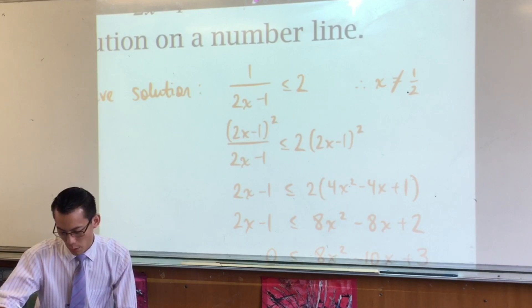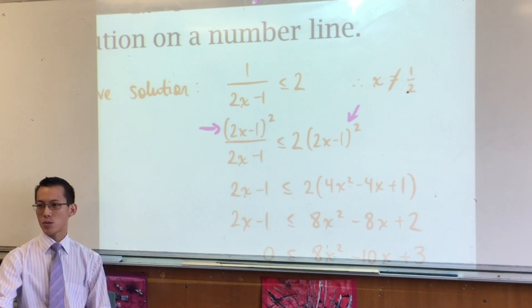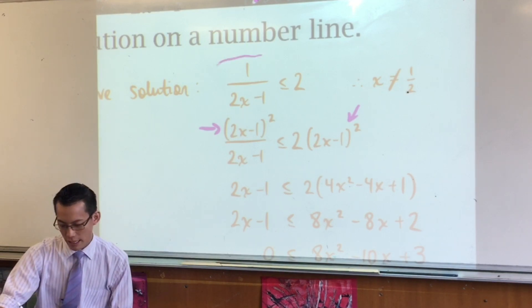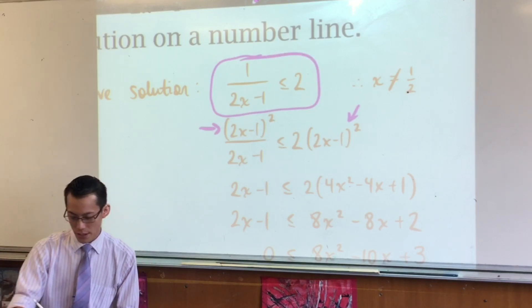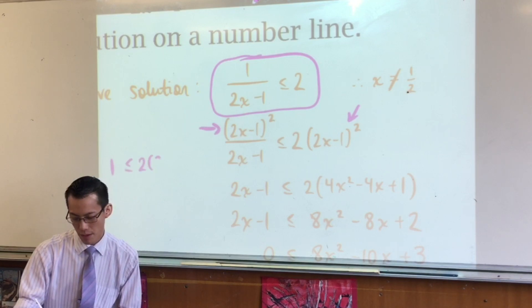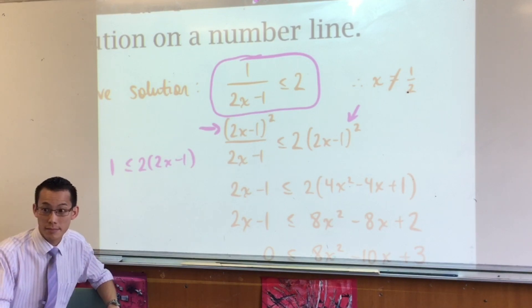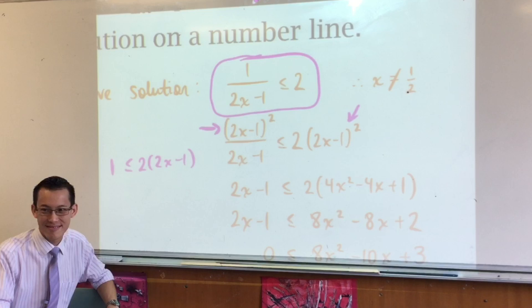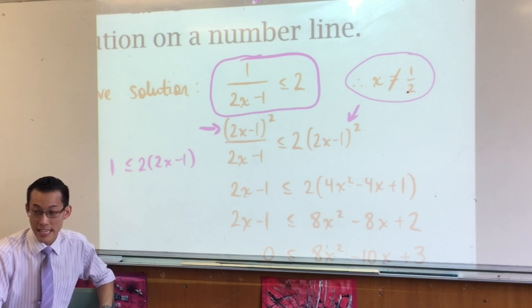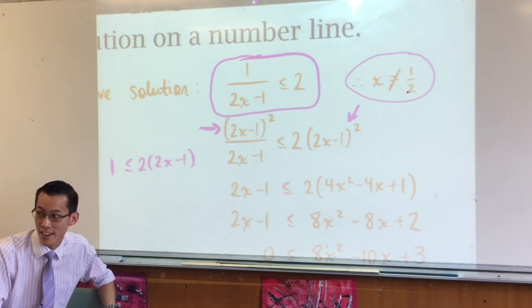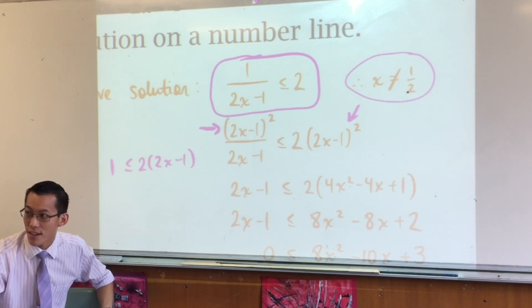Now, this next line here, I've done something a little bit weird. Can you see I've multiplied both sides by 2x minus 1 squared? Now, I know it's not obvious that you should multiply by 2x minus 1 squared. It's more obvious to multiply just by 2x minus 1. Can someone tell me why I can't do that? So there is this restriction issue, that's a bit of a problem, but there's actually something else which is a bigger issue. Declan, you have your hand up.